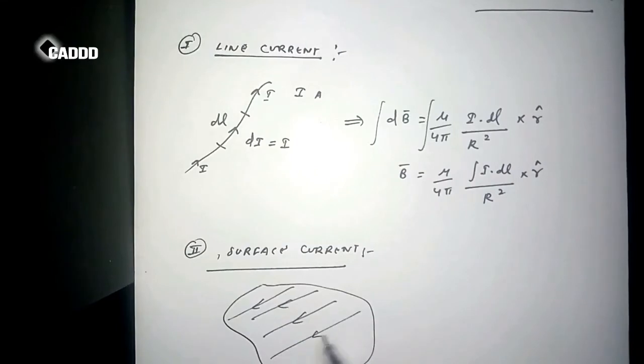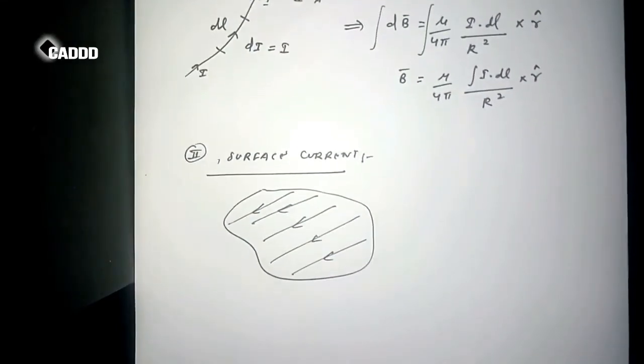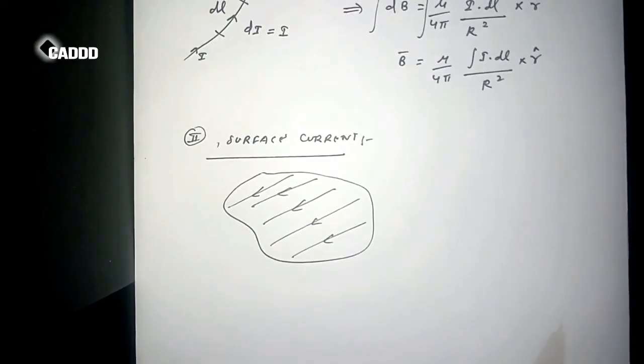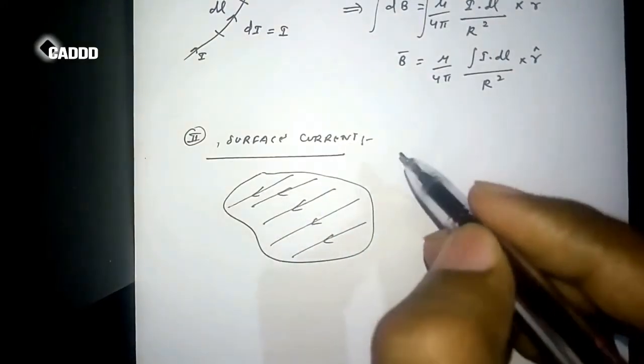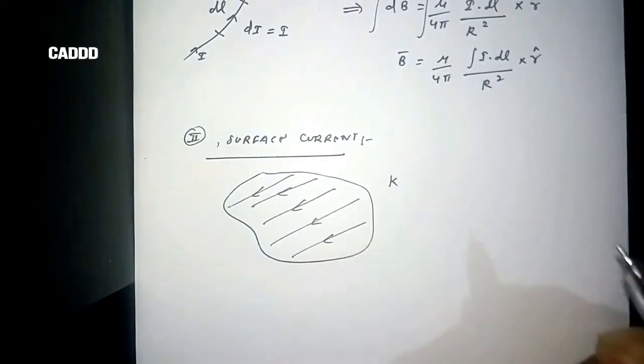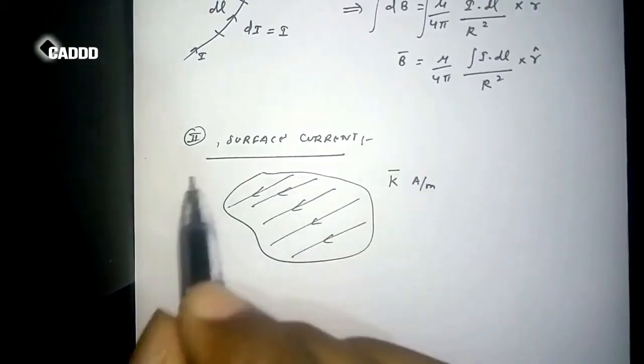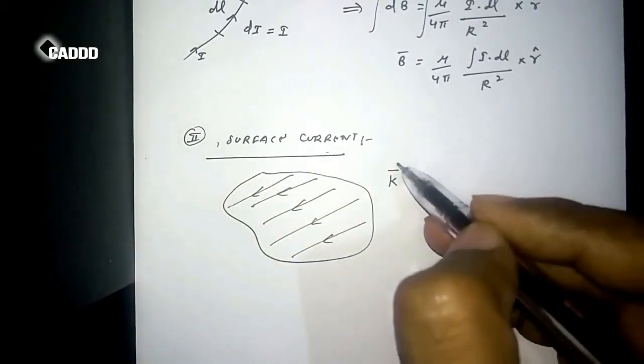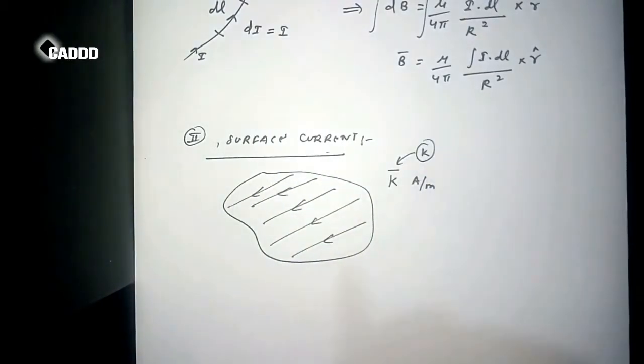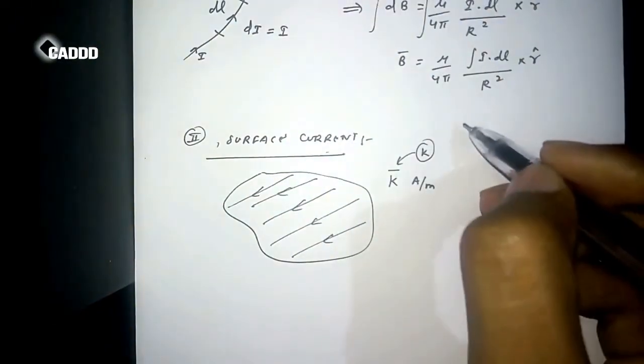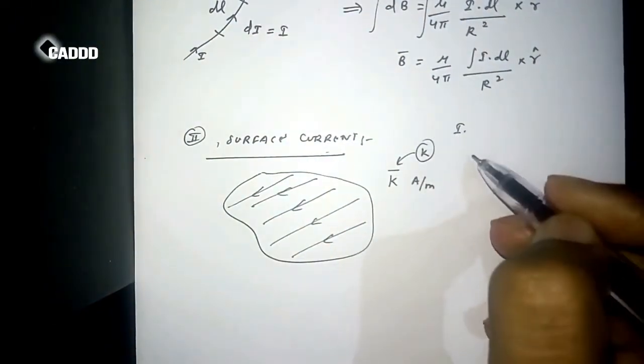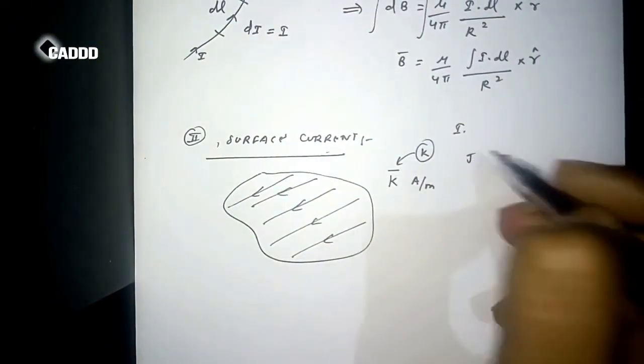So the amount of current moving here is K, K amperes per meter. So surface current is denoted by K, and the line current is denoted by I, and the volume current we will see further, which is denoted by J.